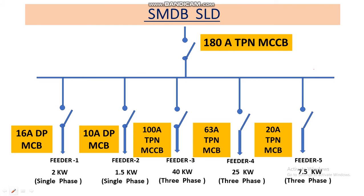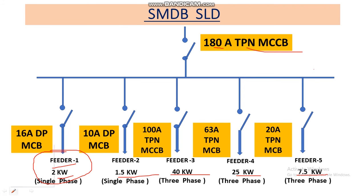Here we have an SLD of an SMDB. The main incomer is a 180 ampere TPN MCCB and there are five feeders. Each feeder has its own loads: Feeder 1 has 2 kW, Feeder 2 has 1.5 kW, Feeder 3 has 40 kW, Feeder 4 has 25 kW, and Feeder 5 has 7.5 kW. These are the loads connected in individual circuits.